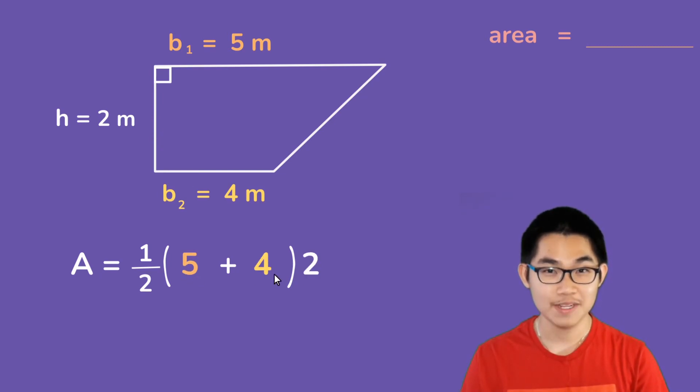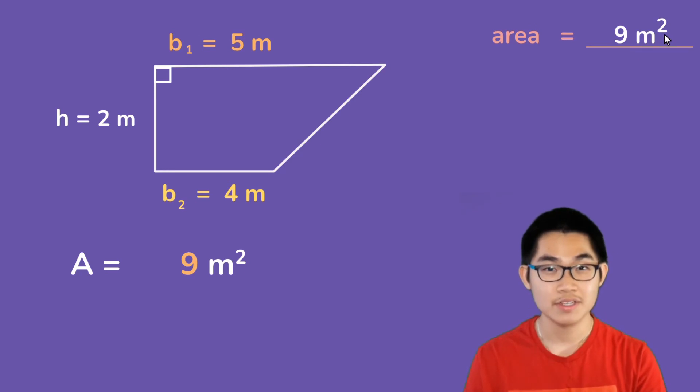5 plus 4 gives you 9. 9 times 2 is 18. And then, 18 divided by 2 gives you 9 meters squared. And so, the area of this trapezoid is 9 meters squared.